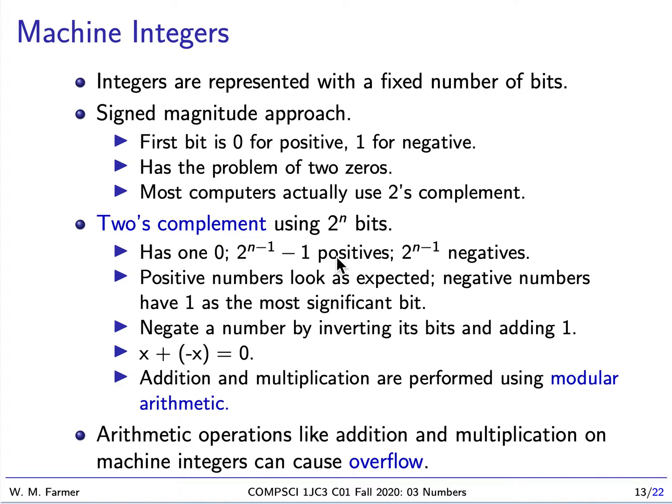A machine integer is an integer represented using a fixed number of bits. There are different ways this can be done. One obvious way would be to use one bit to represent whether the number is positive or negative. This is called the signed magnitude approach — the other bits are used to represent the magnitude, or the absolute value of the integer.